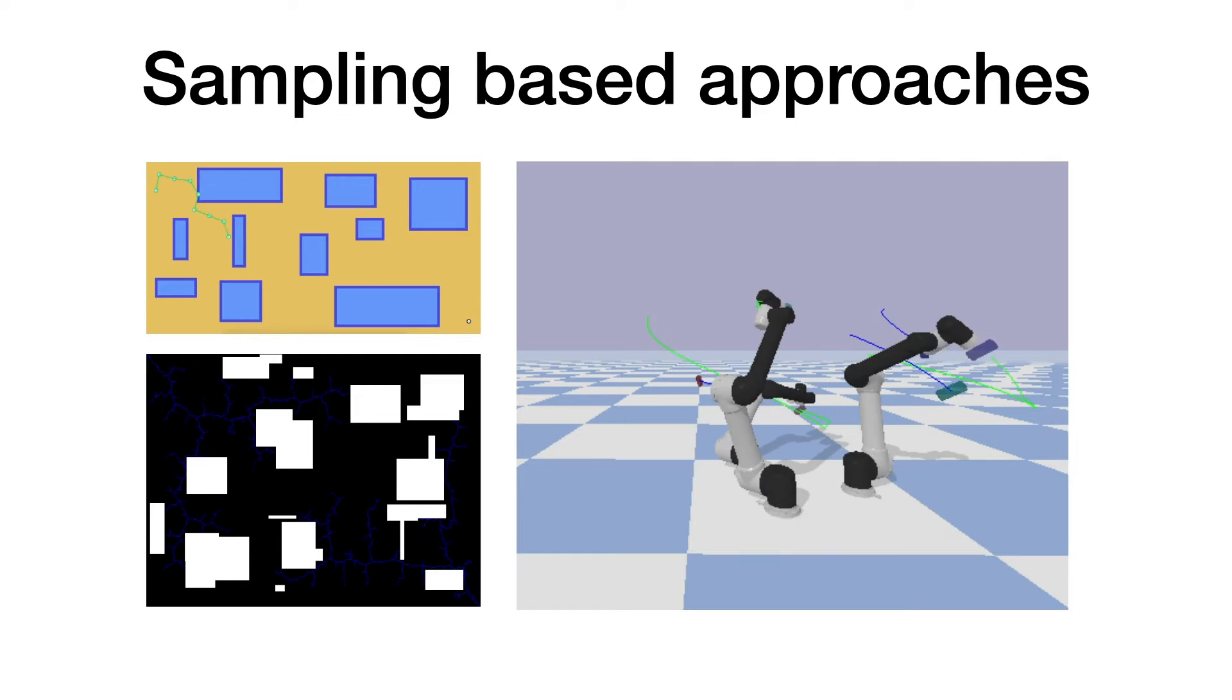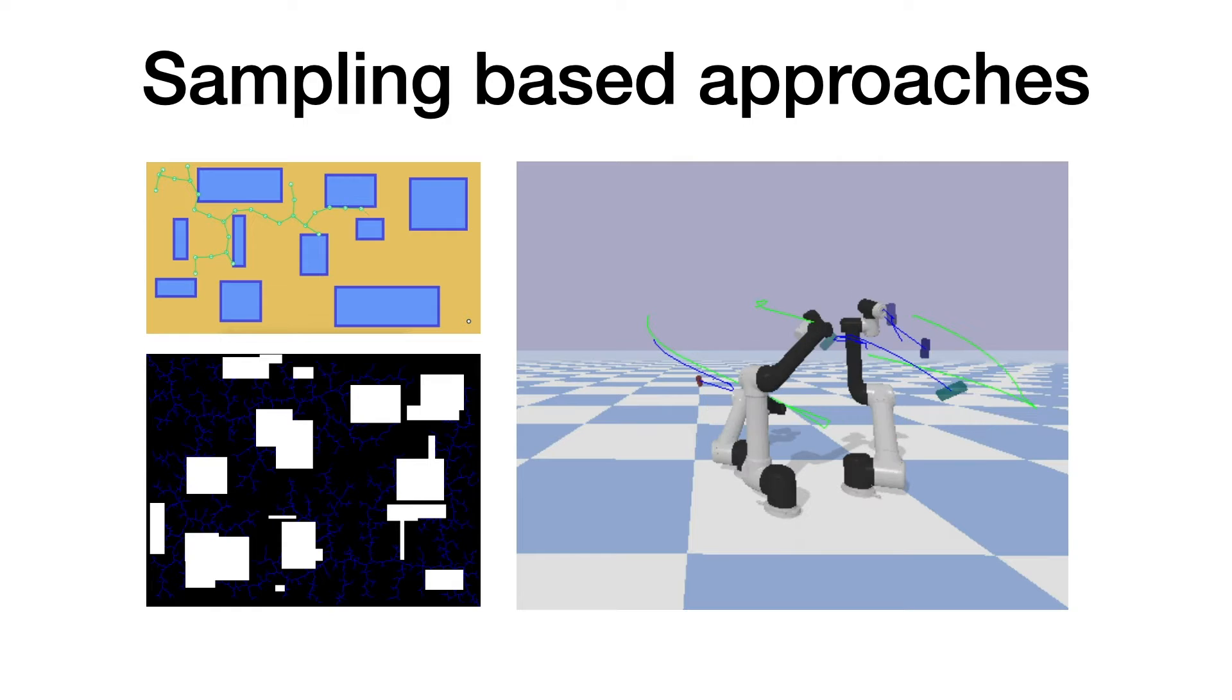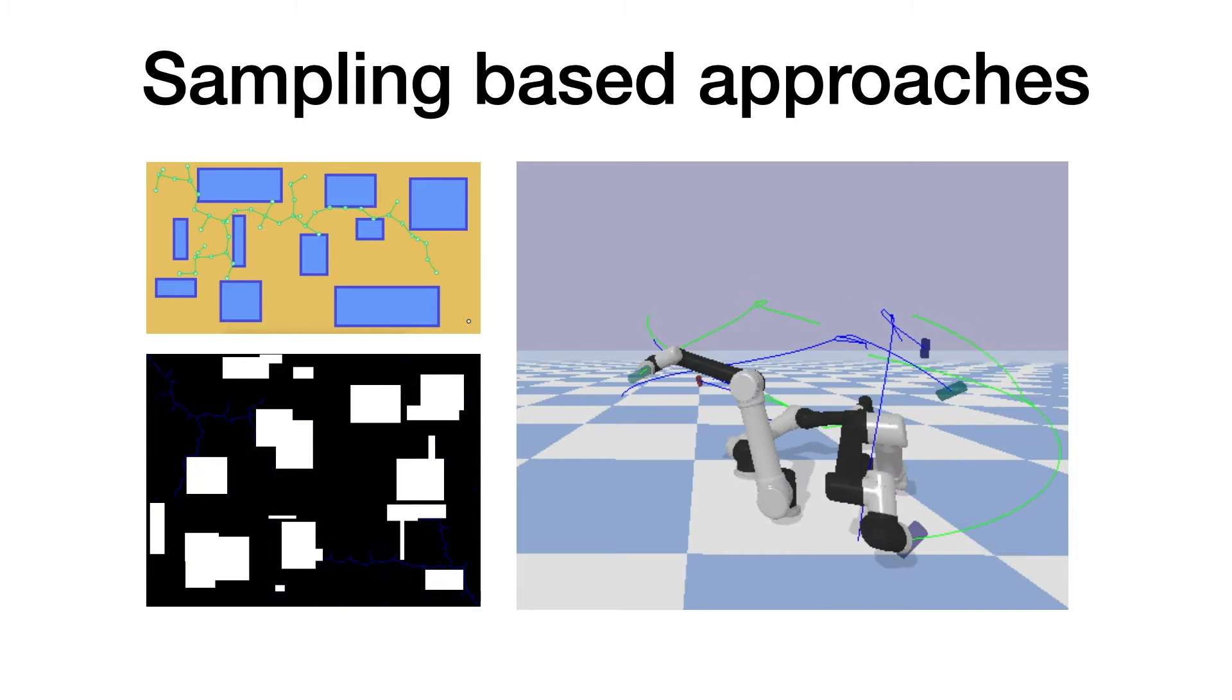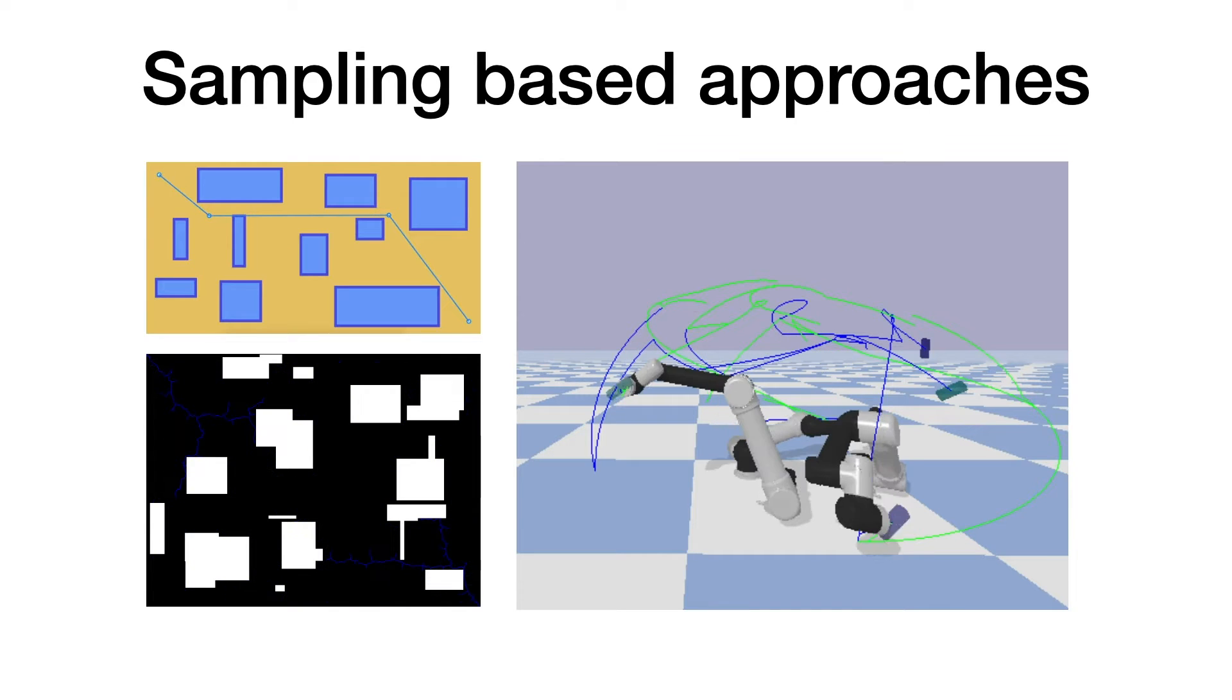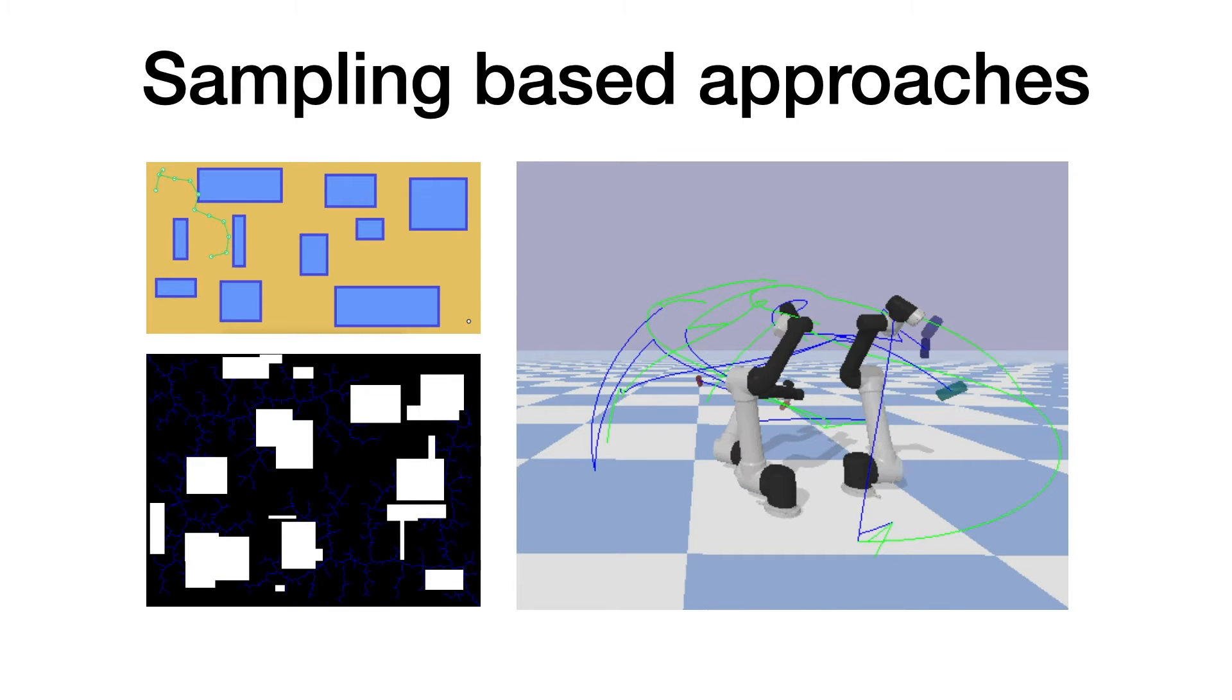Sampling-based approaches, like rapidly exploring random trees, are the go-to solutions for motion planning. However, their runtime scales exponentially with the dimensionality of the configuration space, so it may run efficiently in a 2D maze, but it may not in a multi-arm system with three arms.